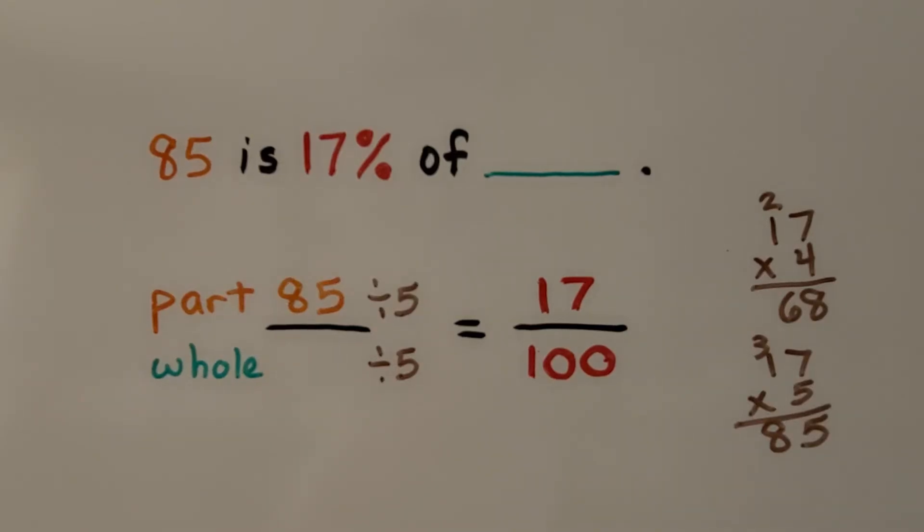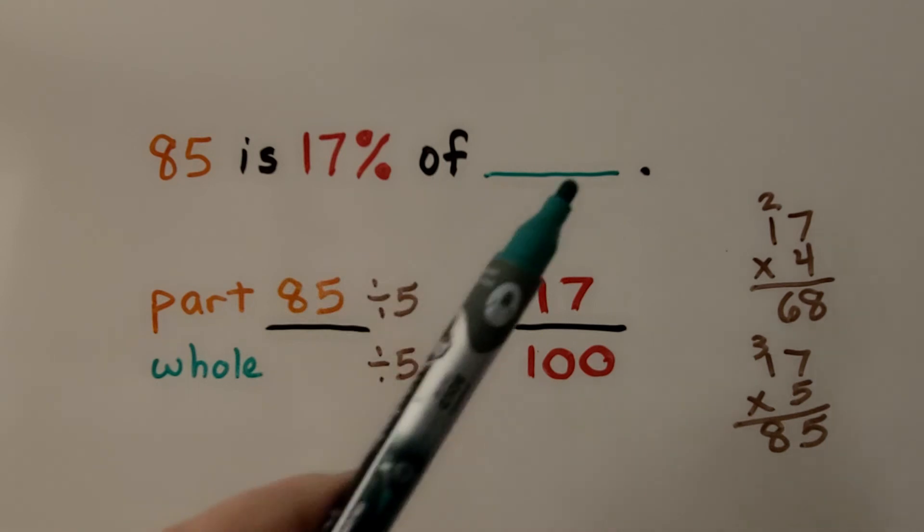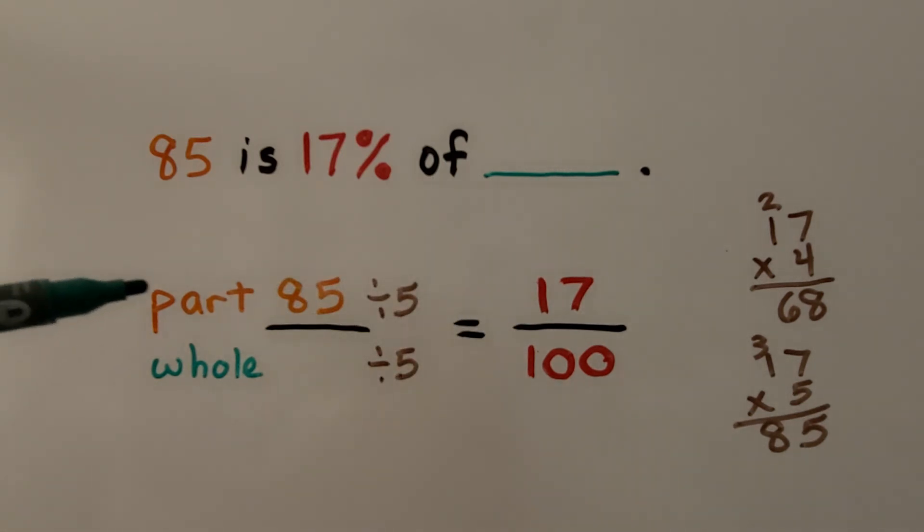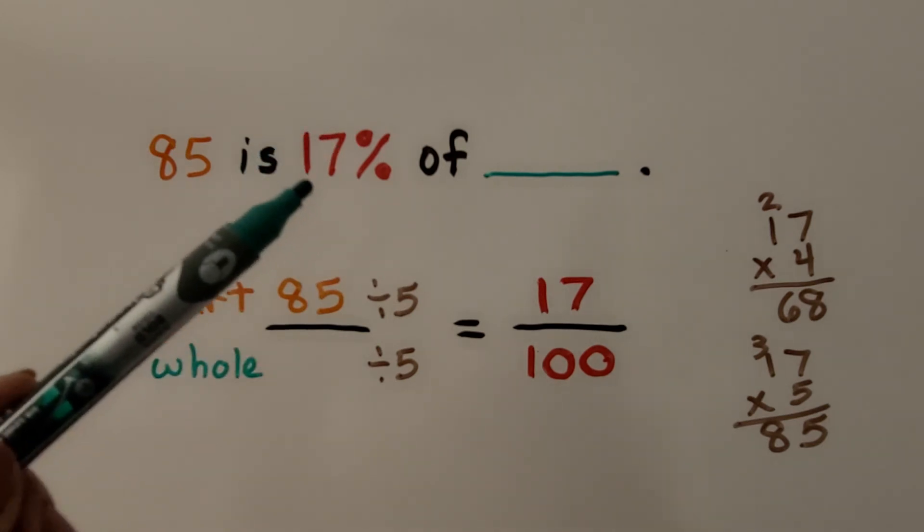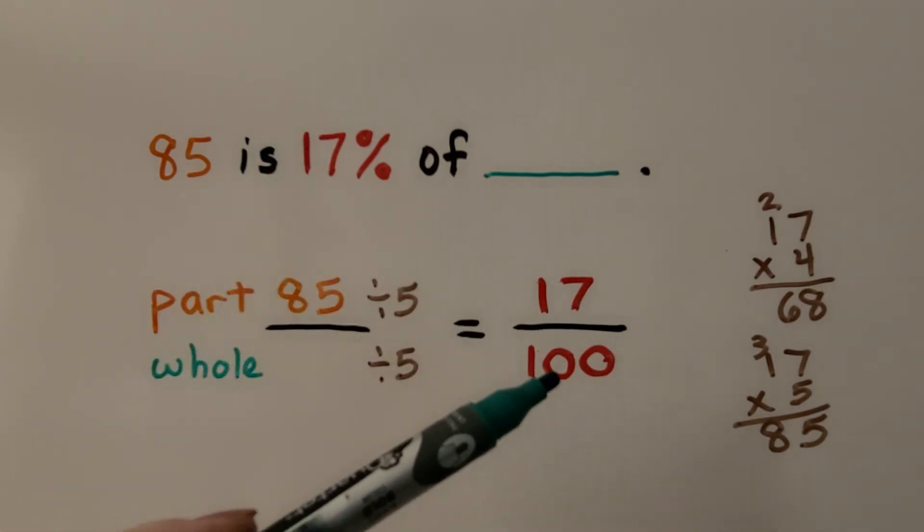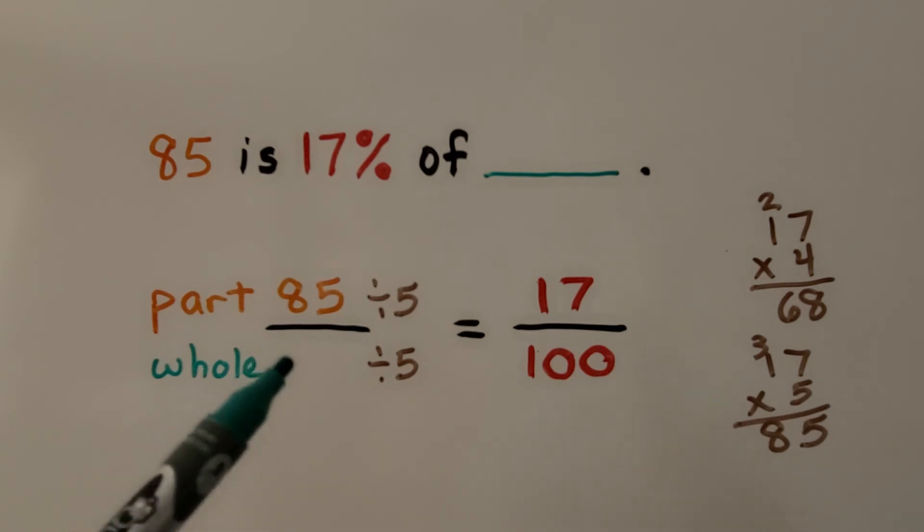Now, this one's written a little differently, but we're still missing the whole. We have 85 is 17% of some total number. Our part is 85. We don't know what the whole is. We know that our percentage is 17 over 100. The whole is always the denominator.